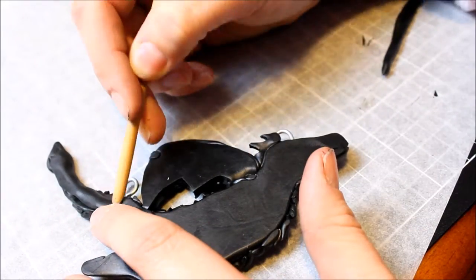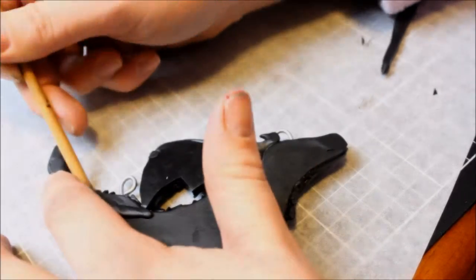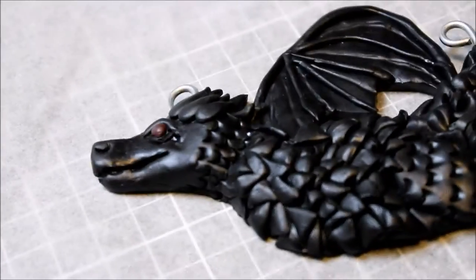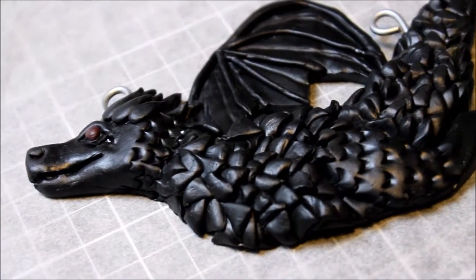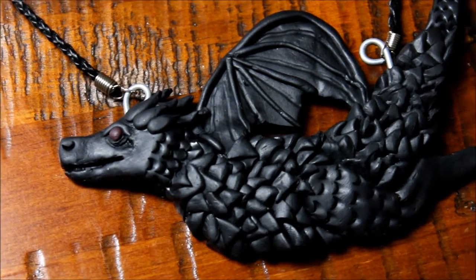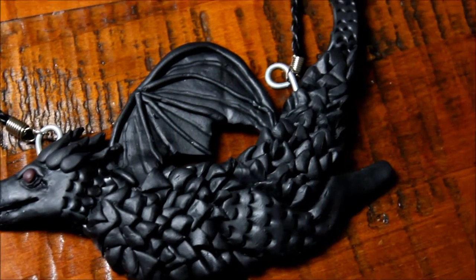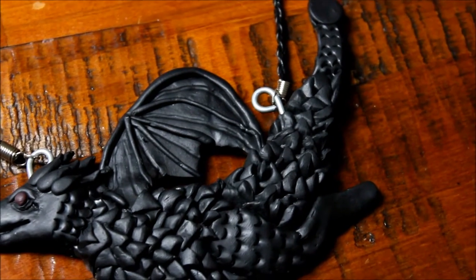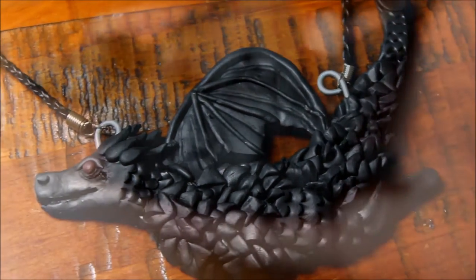In hindsight, I wish I added a support system to the back of the wing as well. It's fine, but if you're going to make this, make sure you secure your wing appropriately too. Go ahead and bake your clay according to your polymer clay's instructions and allow that to cool. Then add your favorite chain to the little hooks you created, and there you have it.